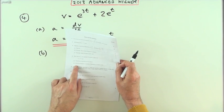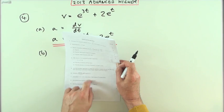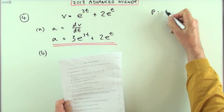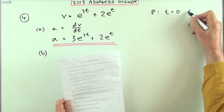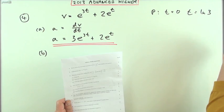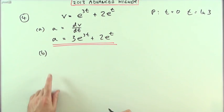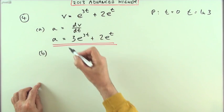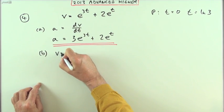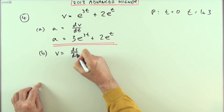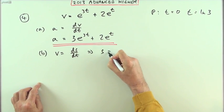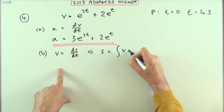Now in part b, find the distance covered by this point between the times t equals 0 and t equals ln3. Well, distance. The velocity is the rate of change of distance. V equals ds by dt. That means if I want the distance, it'll be the integral of v dt.